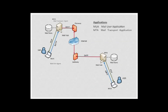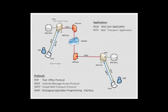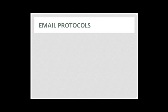IMAP, the Internet Message Access Protocol. MAPI, the Messaging Application Programming Interface, as defined by Microsoft. And SMTP, the Simple Mail Transfer Protocol. Let's take a closer look at these protocols and see what they do.